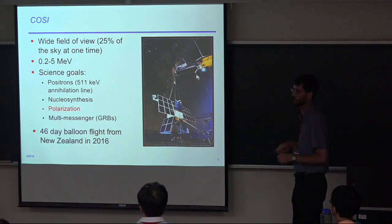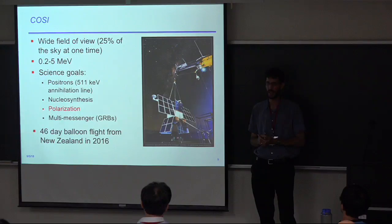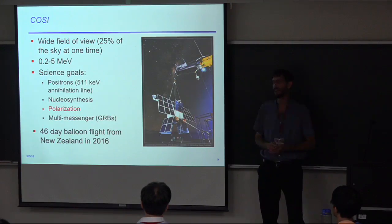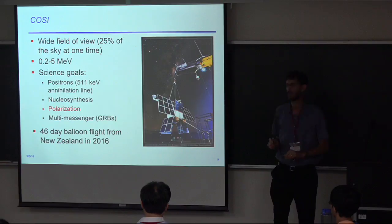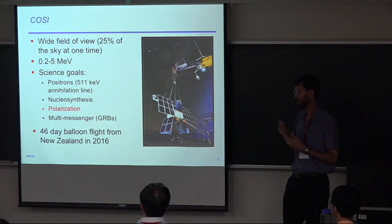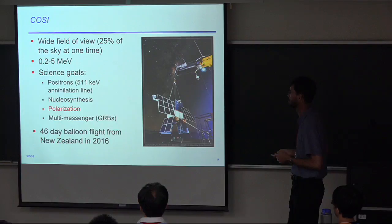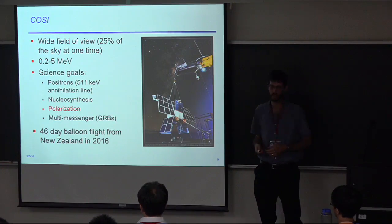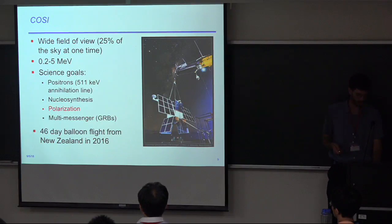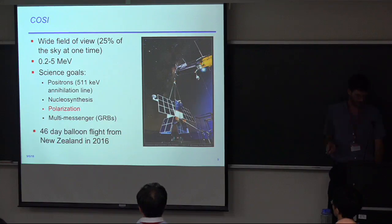A second motivation is nucleosynthesis — there's an aluminum-26 line at 1.809 MeV seen throughout the galaxy, and we also want to measure iron-60 and titanium-44. We observe gamma-ray bursts and participate in multi-messenger astrophysics. We had a 46-day balloon flight from New Zealand in 2016. During the flight we measured a gamma-ray burst — we detected it, did a full polarization analysis, didn't detect polarization but obtained a sensitive upper limit of 46%, which is actually pretty constraining.